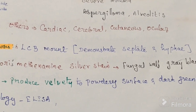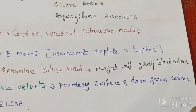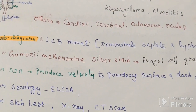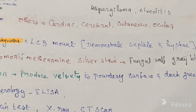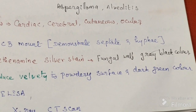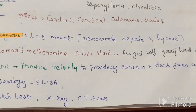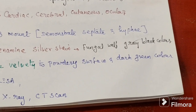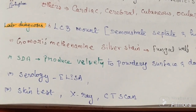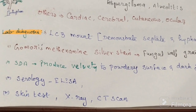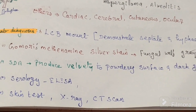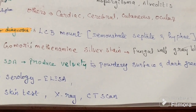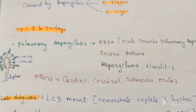For laboratory diagnosis of aspergillosis: lactophenol cotton blue is used to identify structures and hyphae. Gomori methenamine silver staining is used for fungal wall identification. On Sabouraud dextrose agar, it produces a velvety to powdery surface with dark green color. Serological tests include ELISA, skin test, X-ray, and CT scan.